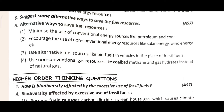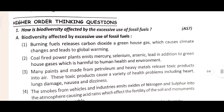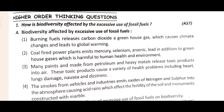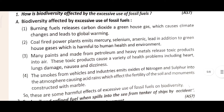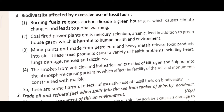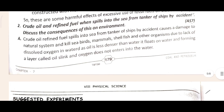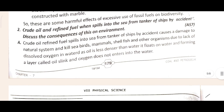If that is clear, let's come to the higher thinking questions. The first question is: how is biodiversity affected by the excessive use of fossil fuels? The answer is given here. The second question is: crude oil and refined fuels spill into the seas from tankers of ships in accident situations — what comes of this to the environment? I hope this is clear.